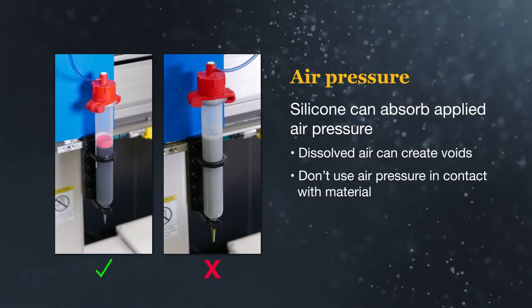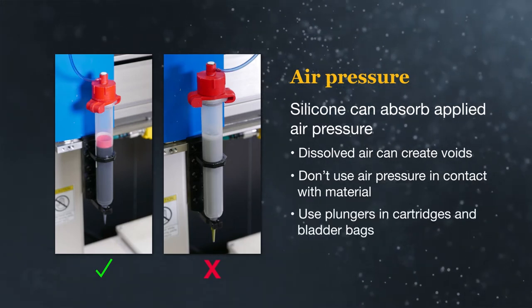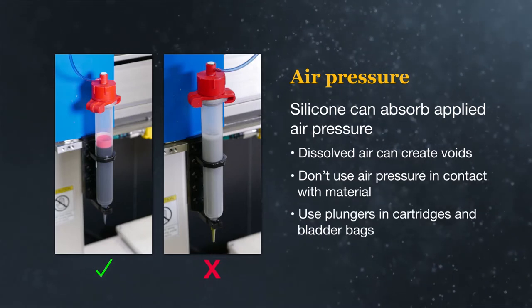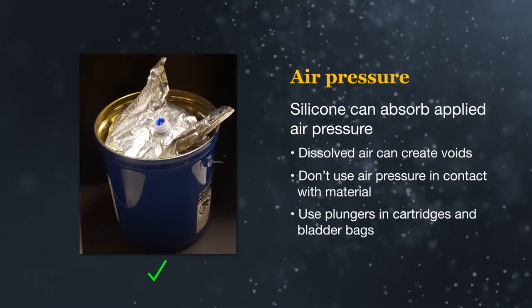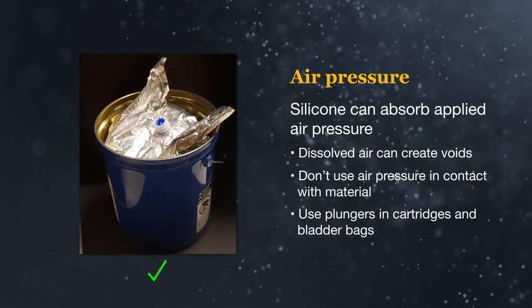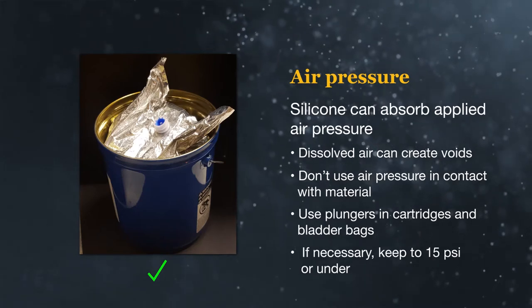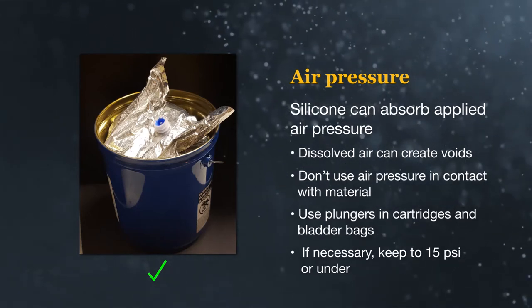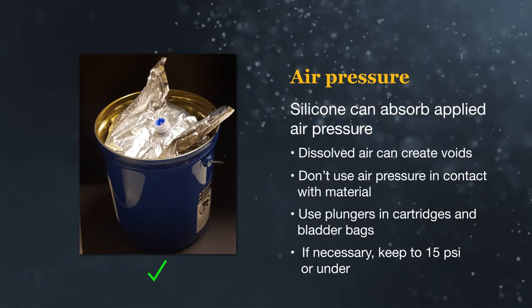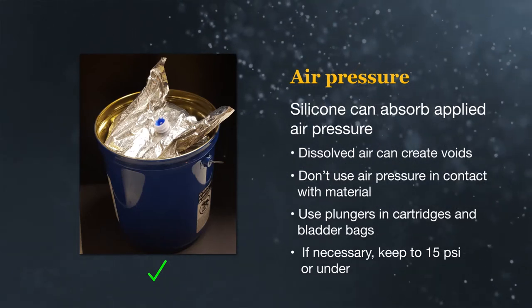Common methods to achieve this are by using plungers in cartridges and bladder bags in pails. If air pressure must be used directly on the product, keep the pressure as low as possible.